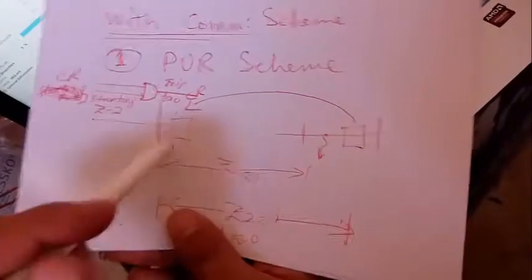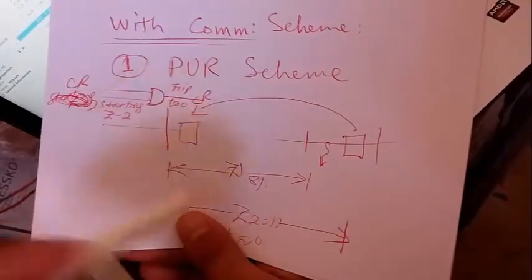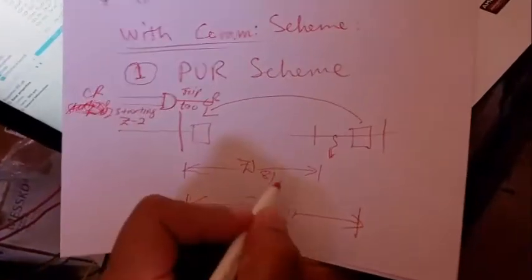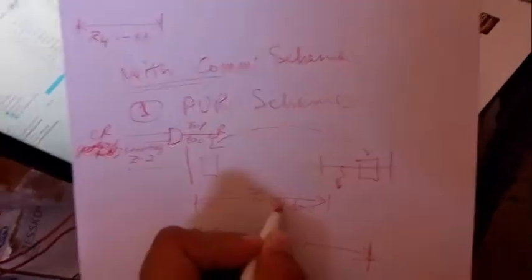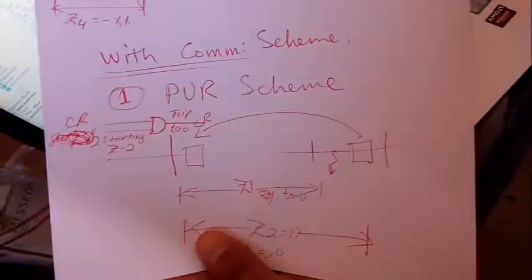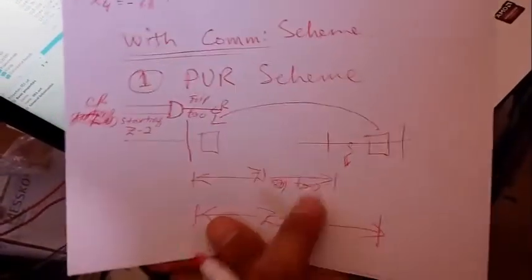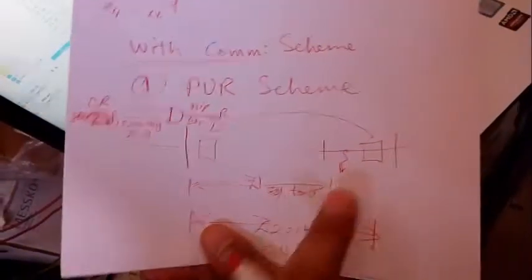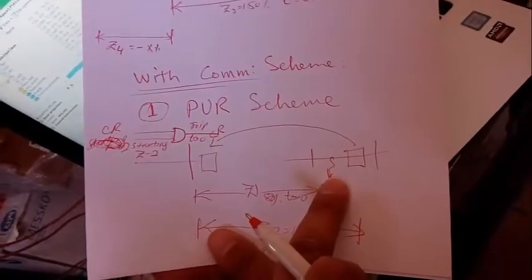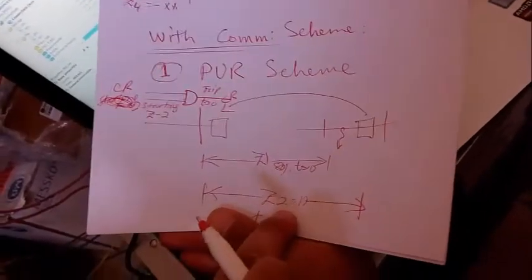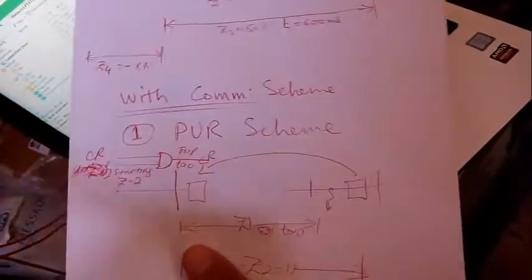In the Permissive Under Reach scheme, if a fault occurs in zone number one, it will take action at time t=0 for 80% of the line. If the fault is within the first 80% of the line, action is taken at t=0. If the fault is beyond 80%, it is sensed in zone number two.